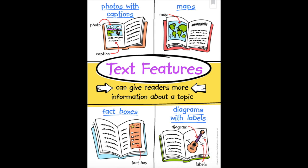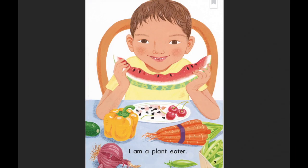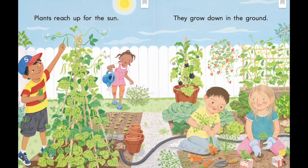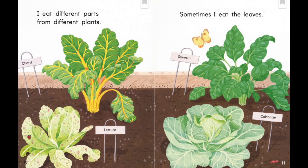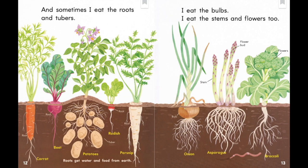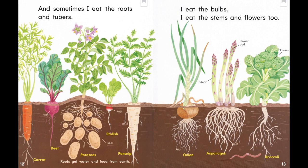I'm a plant eater. Plants reach up for the sun; they grow down in the ground. I eat different parts from different plants — sometimes I eat the leaves, sometimes I eat the roots and tubers. I eat the bulbs, I eat the stems and flowers too. Do you see the text features? I see a diagram with labels and I even see a caption at the bottom of this picture. How do the text features help you learn more information about plants?